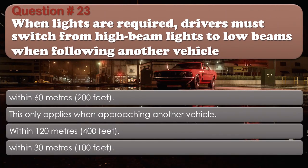Question number 23: When lights are required, drivers must switch from high beam lights to low beams when following another vehicle. This only applies when approaching another vehicle within 120 meters (400 feet), within 30 meters (100 feet). The correct answer is Within 60 meters (200 feet).